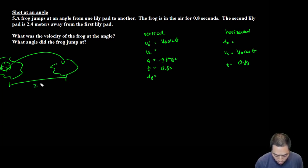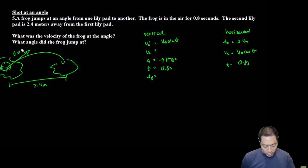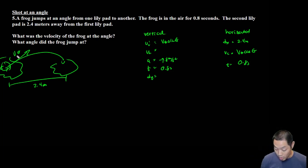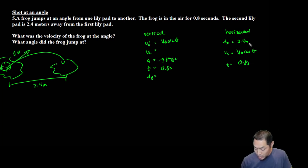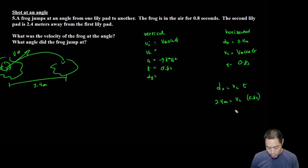What was the velocity of the frog at the angle? So that means how fast did it jump out of here, and what angle did it jump from? We're trying to find v_theta and the angle the frog jumped. We don't know much, but we have enough to solve for vc. dx equals vct. dx is 2.4 meters, vc times 0.8 seconds. Divide 2.4 by 0.8 and you get 3 meters per second equals velocity constant. So now we have that.